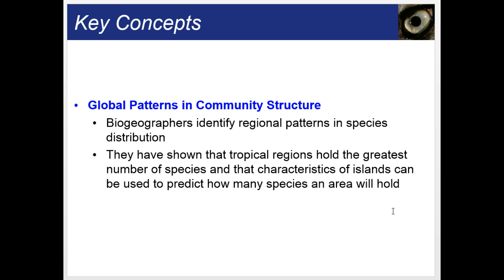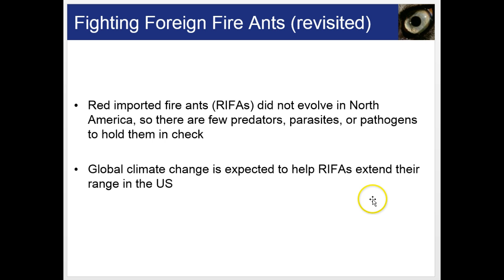Global patterns and community structure: biogeographers have shown that tropical regions hold the greatest number of species, and that characteristics of islands can be used to predict how many species an area will hold. Revisiting the fighting foreign fire ants: the red imported fire ants did not evolve in North America, so there are few predators, parasites, or pathogens that hold their numbers in check — again, they are called invasive or exotic species. Global climate change is expected to help the red imported fire ants extend their range in the U.S.